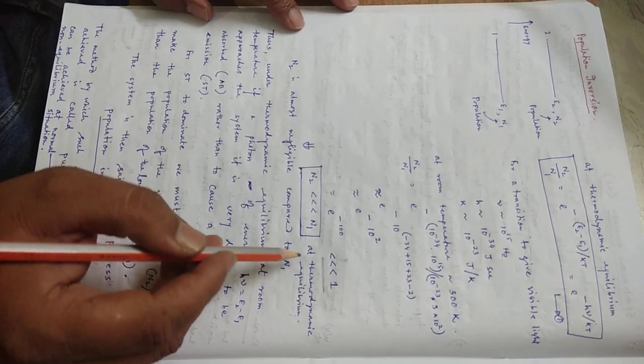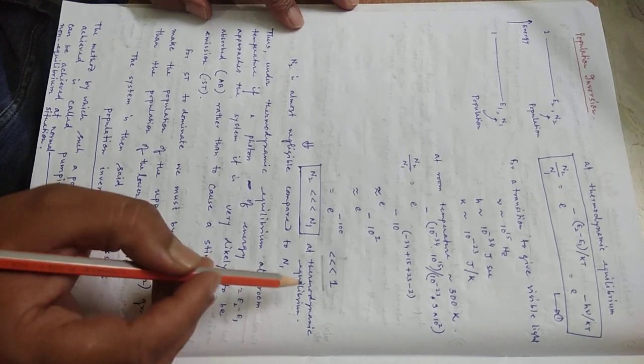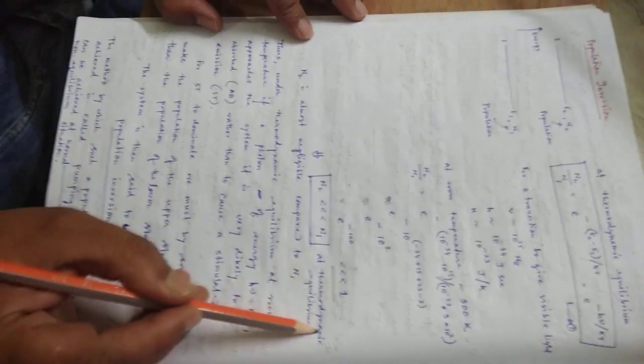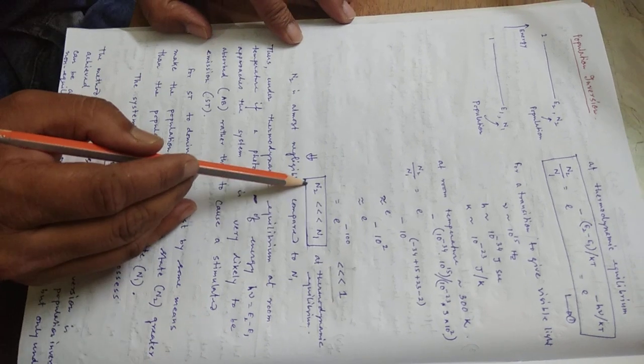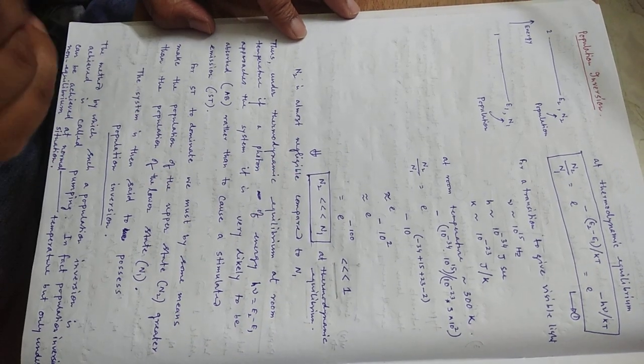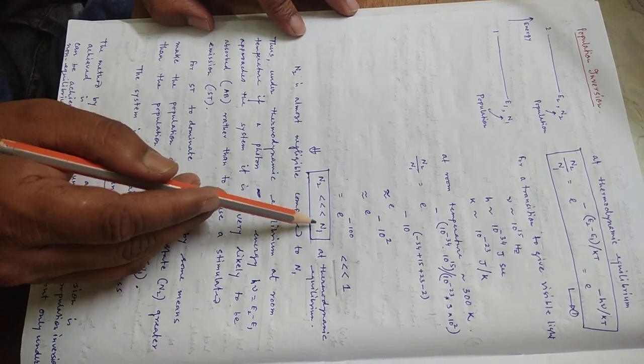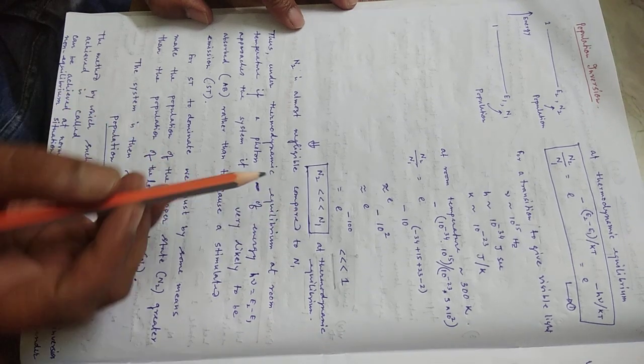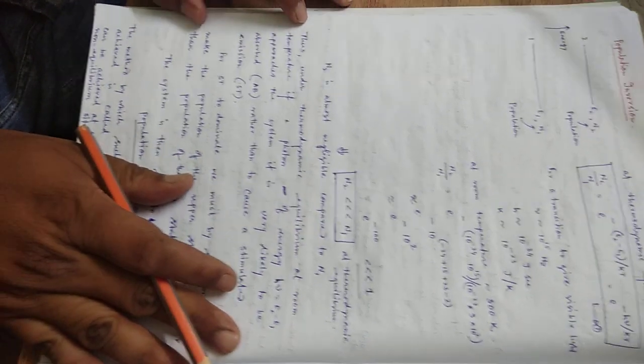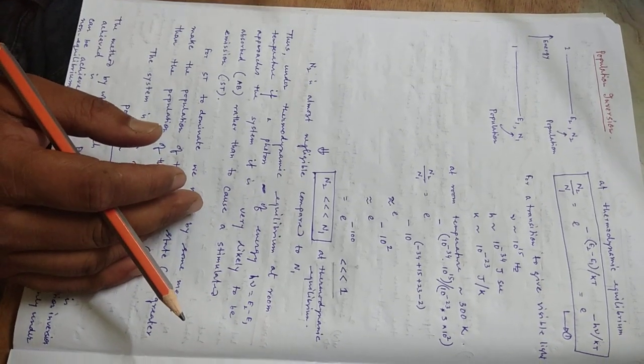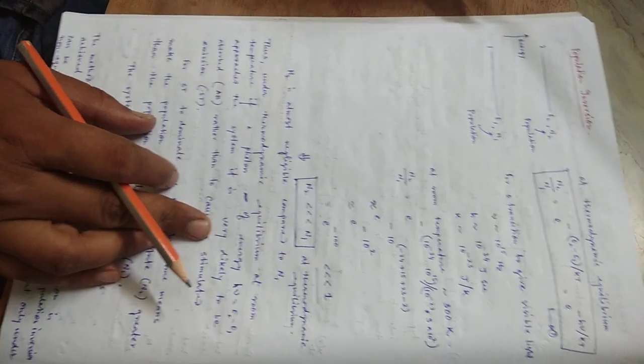But what we see in practical situation, we see that if your system is at thermodynamic equilibrium, then N2 is much much less than N1. So you can understand that if N2 is much much less than N1, that means number of stimulated emission will also be negligible.